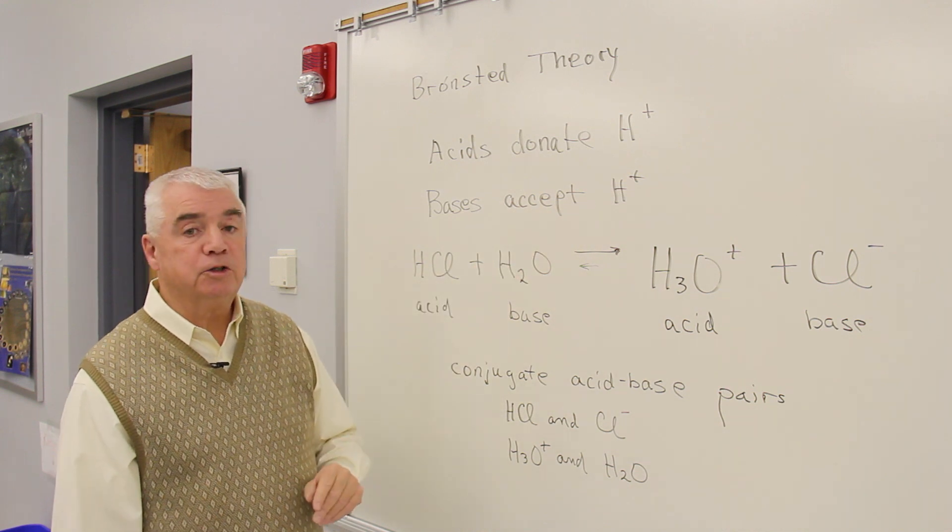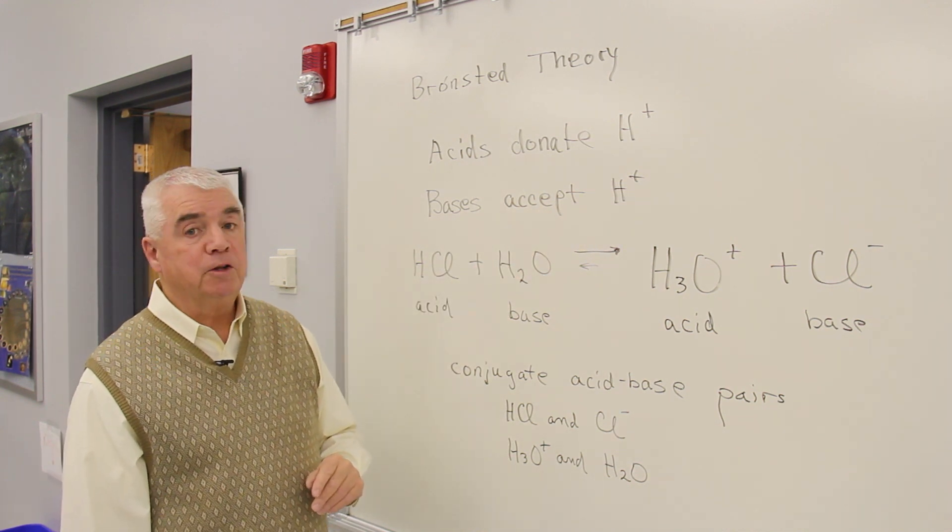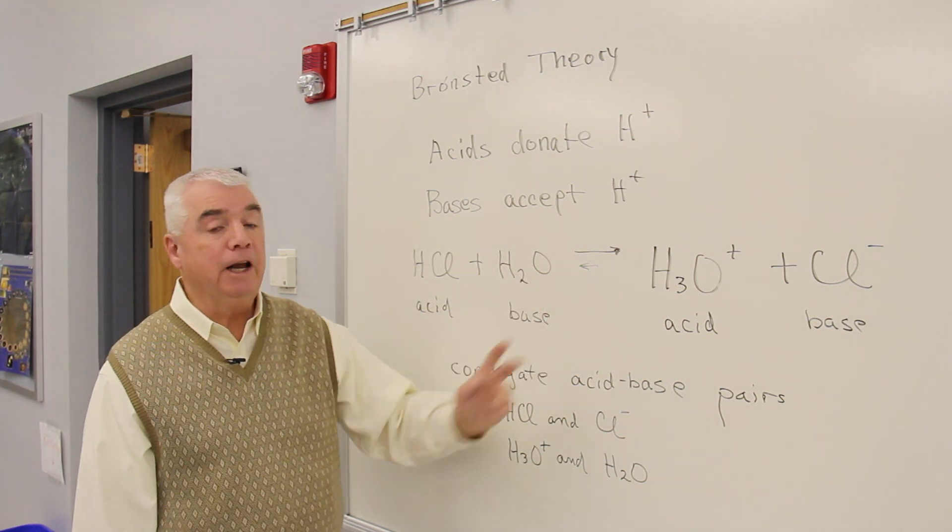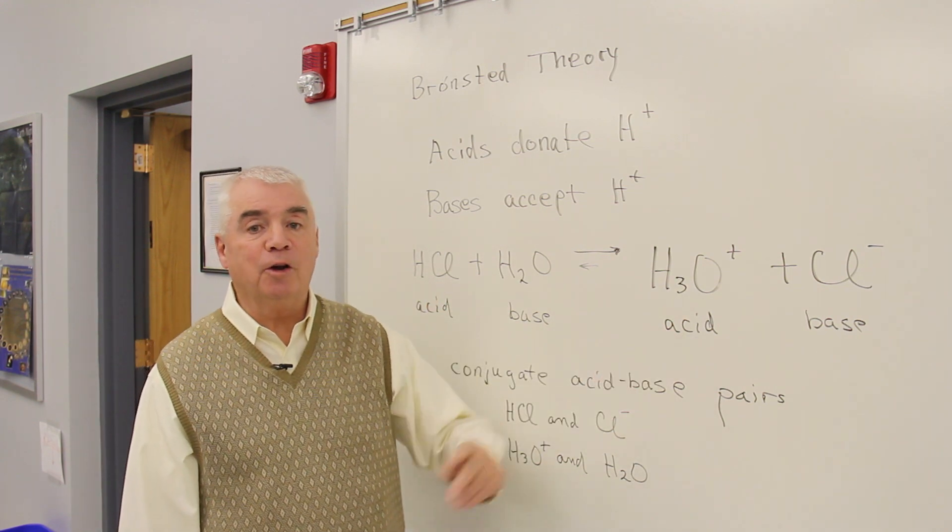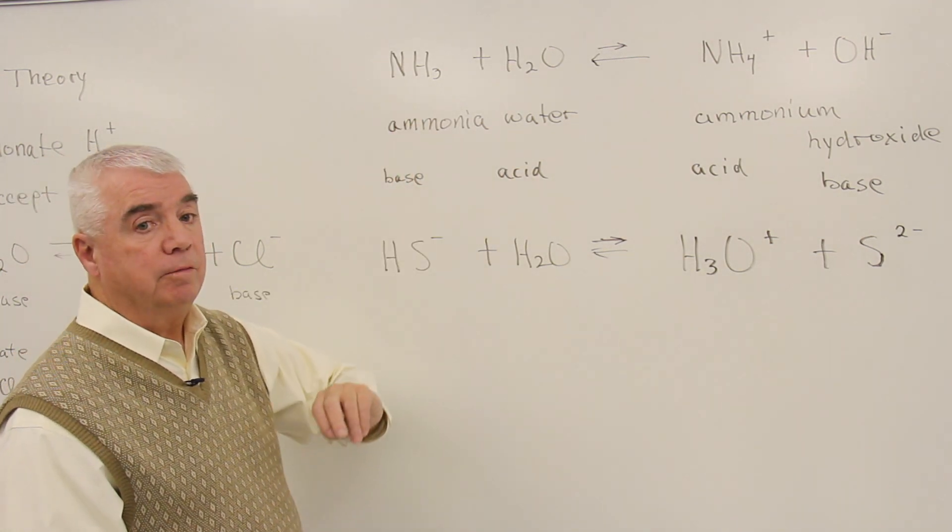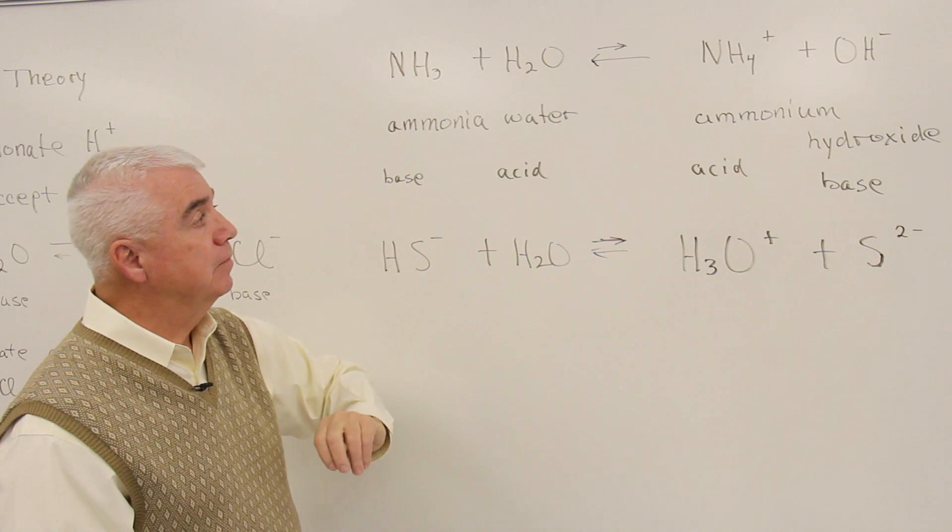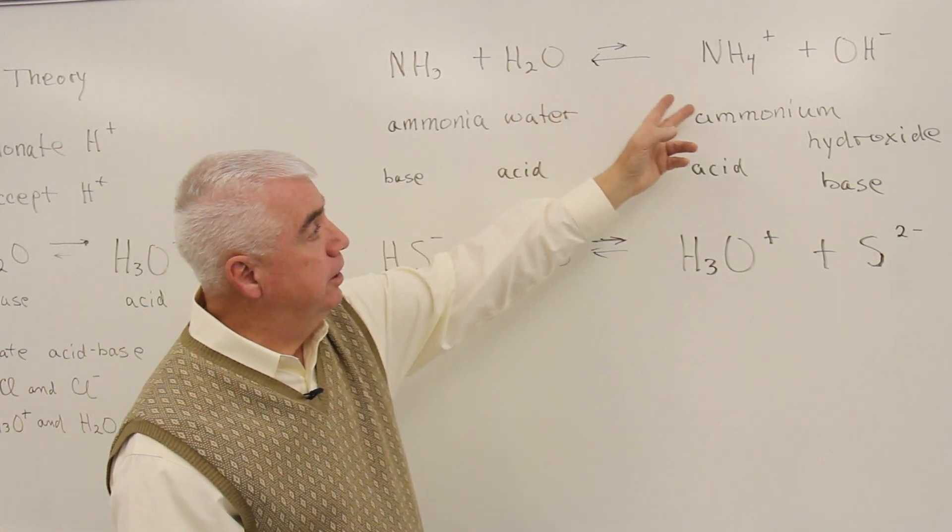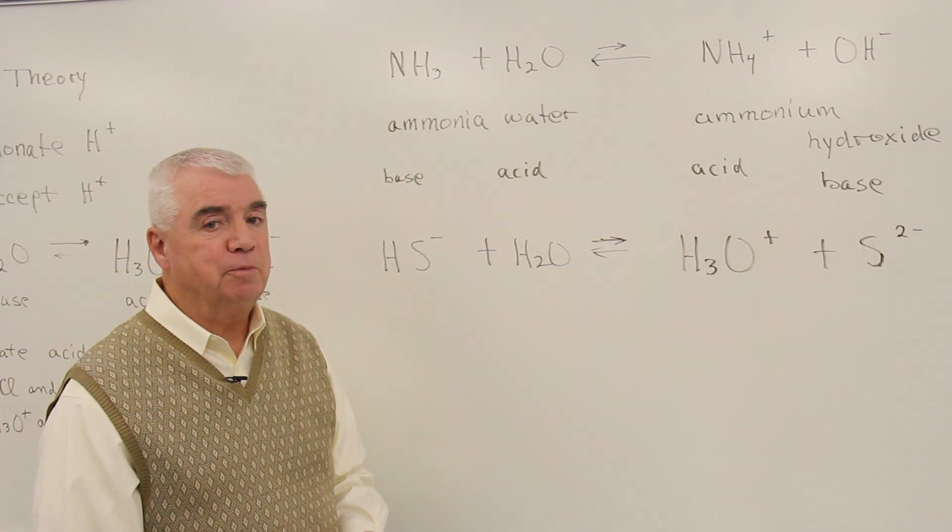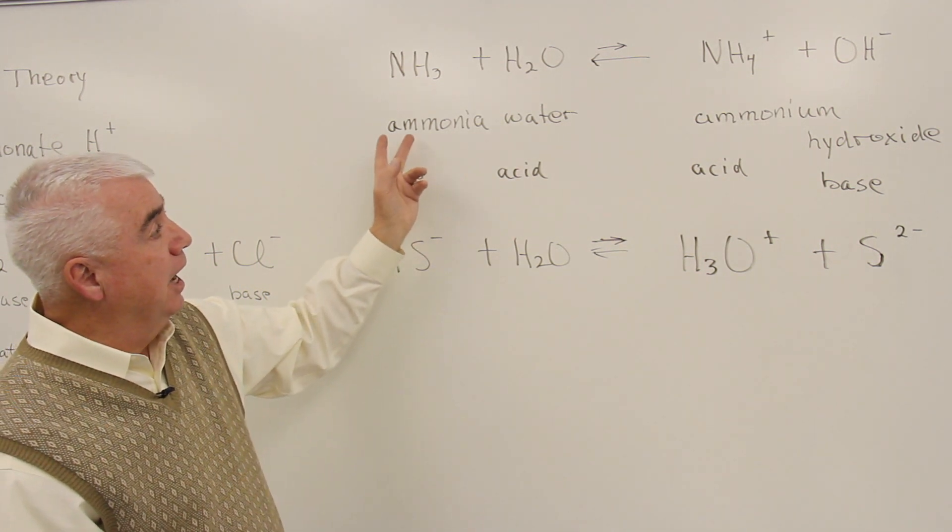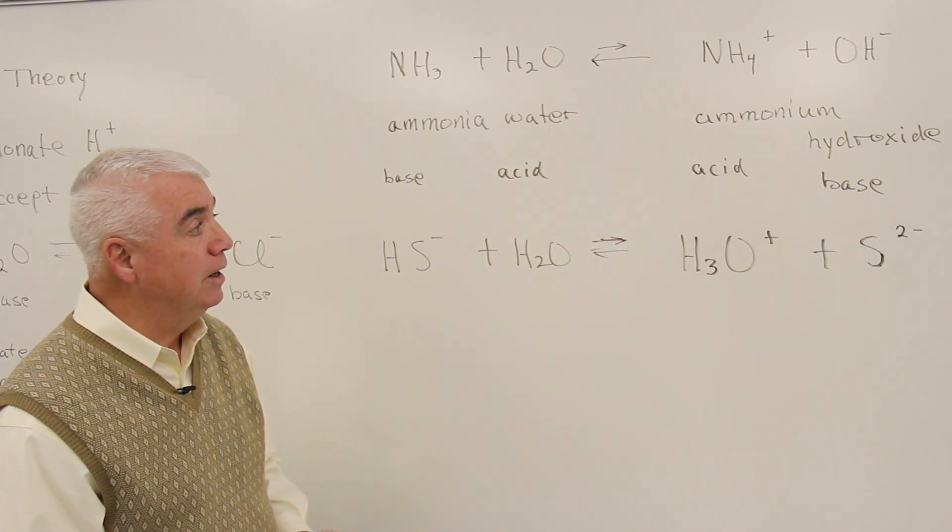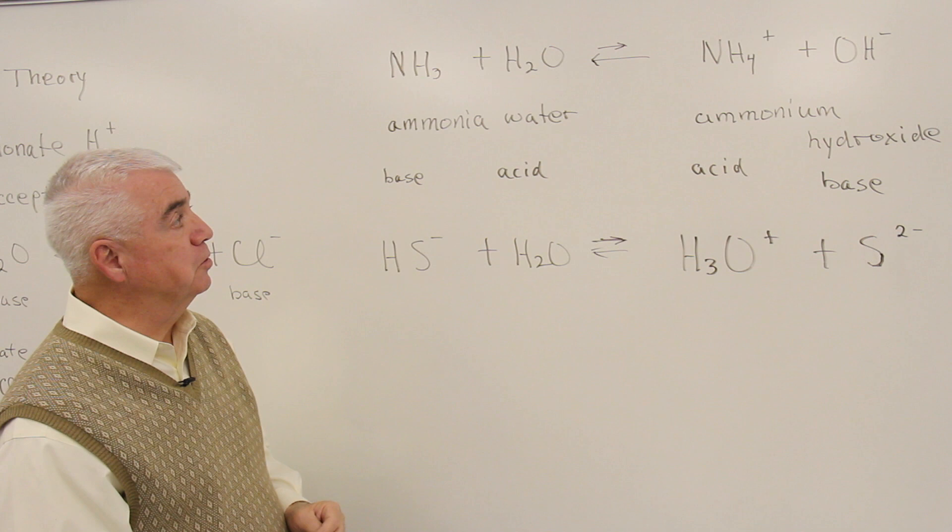Let's look at two more equations that are Bronsted acid-base reactions. It's an important skill that we'd like you to have to be able to identify the acids and bases on both sides of the equation. Here's a common product around the home, ammonia water. It's a mixture of ammonia and water. In a reversible reaction, it can form ammonium hydroxide. Ammonia water makes a good cleaner, especially for windows and screens, probably because of that OH- that's formed. It's good at attacking greases and films.